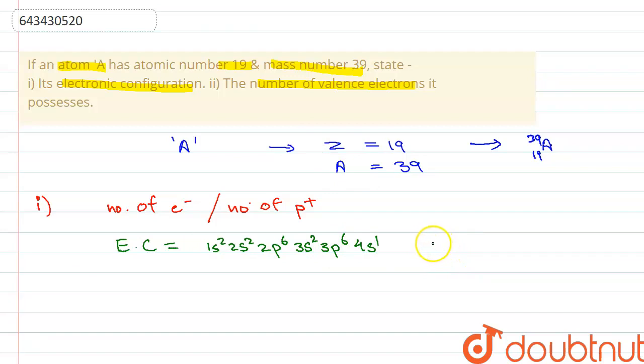On the second part of the question they have asked us what is the number of valence electrons. So what are valence electrons? Valence electrons are the electrons present in the outermost shell in the atom - electrons in the outermost shell of an atom.